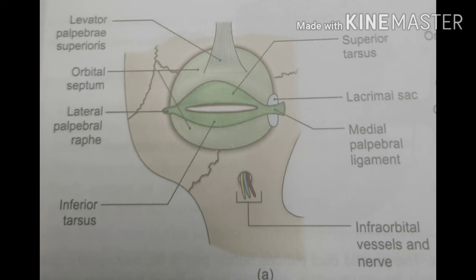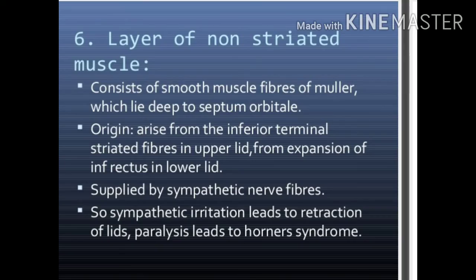The palpebral fascia or orbital septum is pierced by the palpebral part of the lacrimal gland, fibers of the levator palpebrae superioris, and vessels and nerves entering the face from the orbit. The next layer is the non-striated muscle — Müller's muscle — which is supplied by sympathetic nerve fibers.